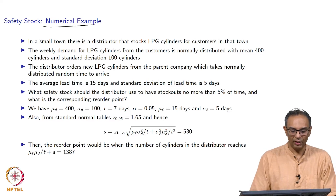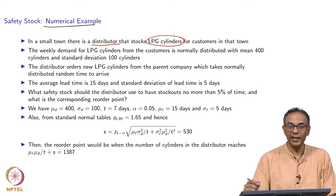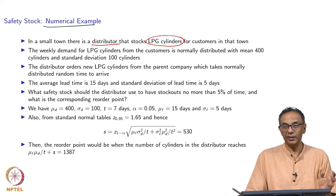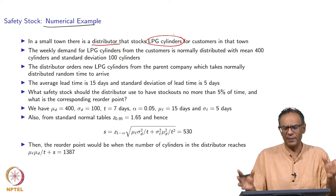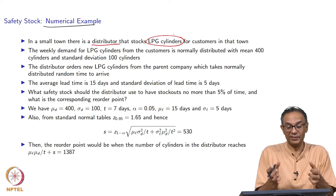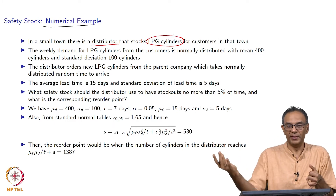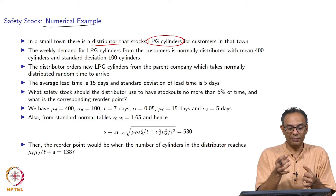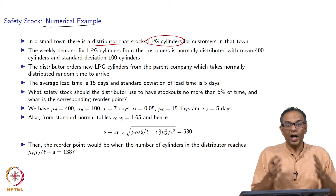Think of a small town where they have a distributor that sells LPG cylinders — liquefied petroleum gas cylinders, the kind we use in our homes for cooking. Most people actually already plan for uncertainty by having two cylinders in their house, so that when one cylinder finishes, they make a call and get a new cylinder after a few days.